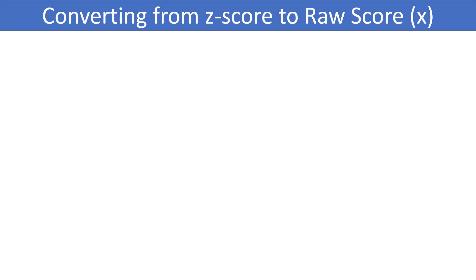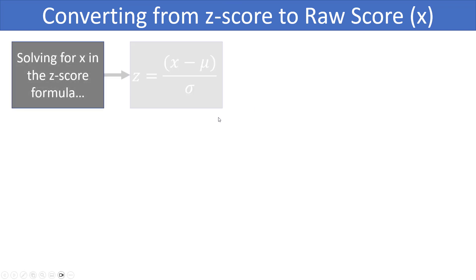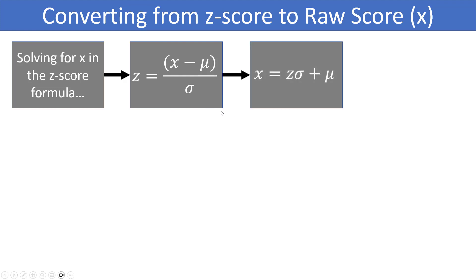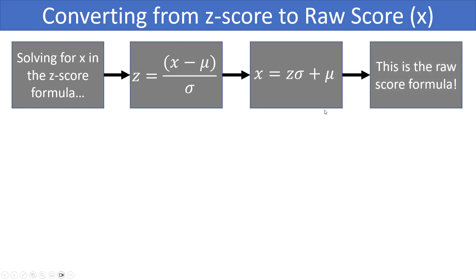In some cases you might want to go backwards — instead of finding a Z score, you might want to find a raw score. If you solve for X in the Z score formula by multiplying both sides by sigma and then adding mu to both sides, you get the raw score formula: X = Z · σ + μ. This tells you, for example, the weight of a cat if you know the Z score, the standard deviation, and the mean.